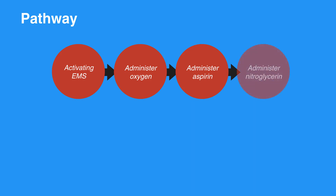Administer nitroglycerin: give 0.3–0.4 mg sublingual spray, two doses at 3–5 minute intervals. Do not use if systolic blood pressure is less than 90 mmHg. Do not use if a phosphodiesterase inhibitor, like Viagra, has been taken within 24 hours.